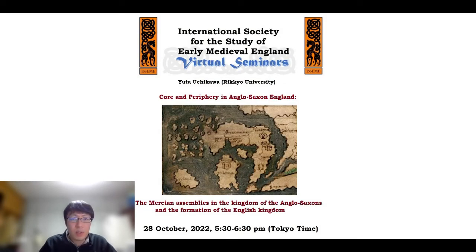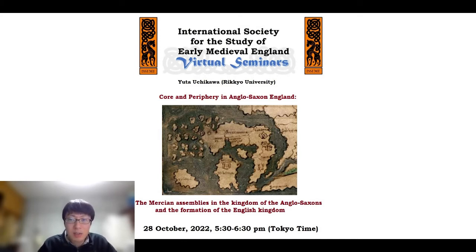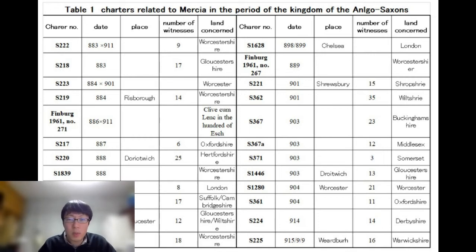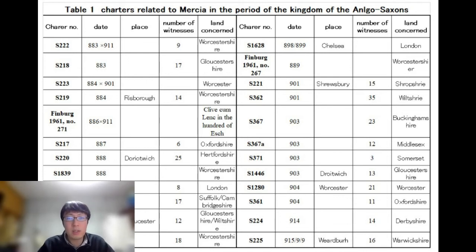The Mercian witnesses were designated as the counselors — or literally 'wise men' — of the Mercians. When assemblies were convened jointly, the West Saxon counselors and their Mercian counterparts were distinguished. Apart from those who appeared in the joint assemblies, there was no Mercian layman who attested in West Saxon charters. Mercian bishops were occasionally found in West Saxon charters since they had to attend church councils of the province of Canterbury, which was under West Saxon control. Generally speaking, there were two distinct assemblies with different participants in the kingdom of the Anglo-Saxons.